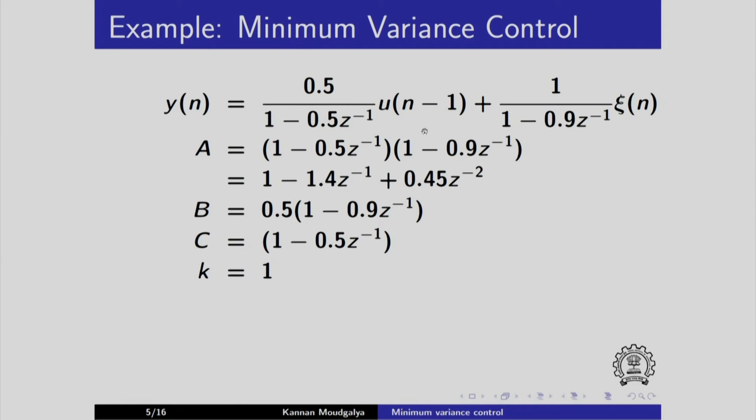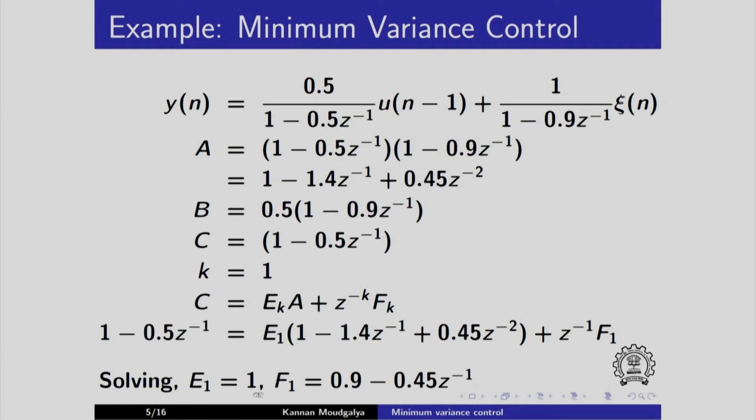Using the approach that we used before, we get this a, b, c, k terms. In order to do that, you may just want to multiply this whole thing by 1 minus 0.5 z inverse into 1 minus 0.9 z inverse. That will come here. If you do that, what you get here is the b term and what you get here is the c term which is 1 minus 0.5 z inverse. As I mentioned earlier k is 1 and when I divide c by a, I get e k and f k. I have to solve this polynomial equation using one of the methods explained in the previous video and I get e 1 equals 1, f 1 is 0.9 minus 0.45 z inverse.